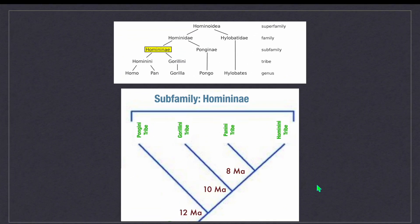You are seeing a cladogram where the phylogeny of tribes Pongini, Gorilini, Panini and Hominini is shown. The Pongini tribe separated from our ancestors about 12 million years ago. The Gorilini tribe separated from us about 10 million years ago. Our ancestors got separated from the Panini tribe, which belongs to the chimpanzees, some 8 million years ago.